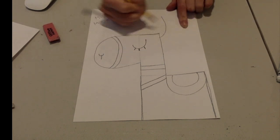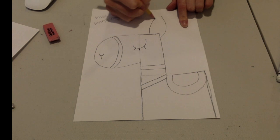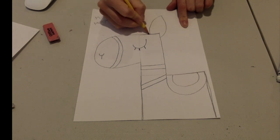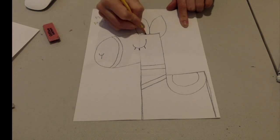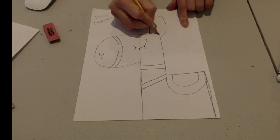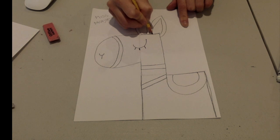For the ears, go ahead and draw ears on the top of your llama. You can do any shape you want for the ears, they almost look like petals to a flower. And then do another inner shape, the same shape inside, that's the inside of the ear.